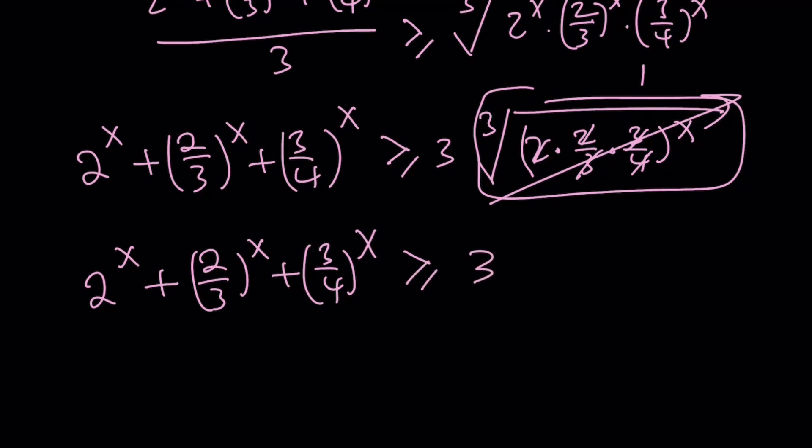But remember, our original equation said that they're equal to 3, not greater than or equal to 3. So when does that happen? When you have the AM-GM inequality, when does (a+b+c)/3 equal the cube root of abc? When all the terms are equal, obviously, right?